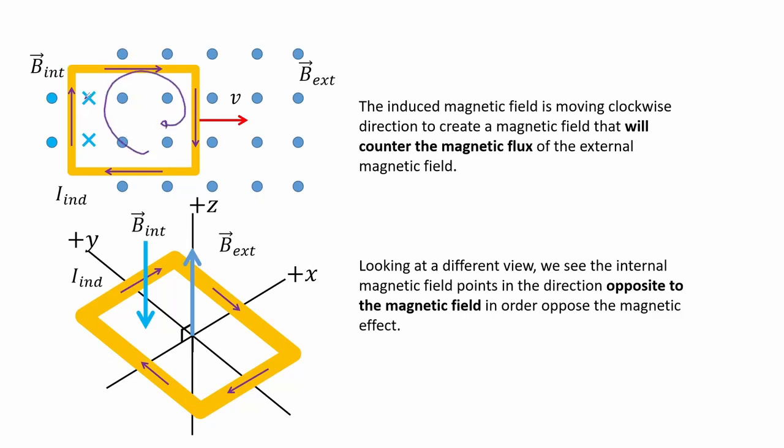Looking at a different view, we see the internal magnetic field points in the direction opposite to the magnetic field in order to oppose the magnetic effect.